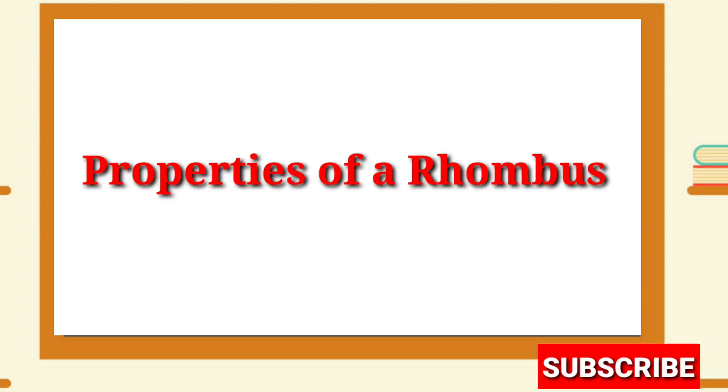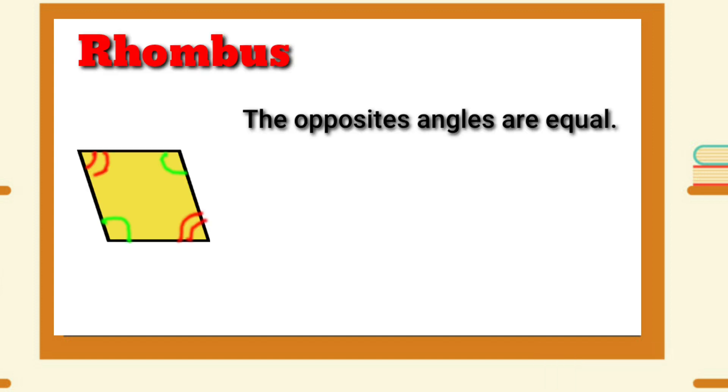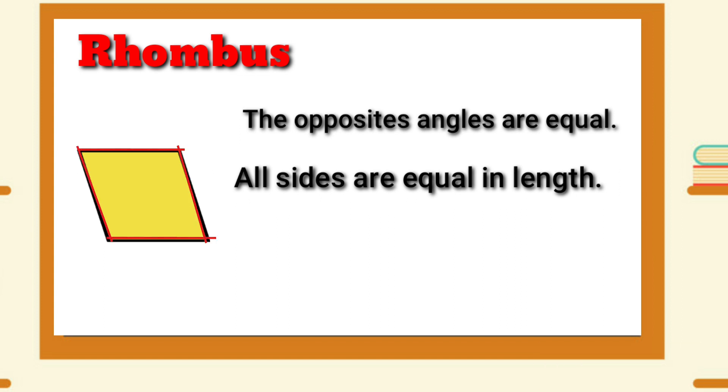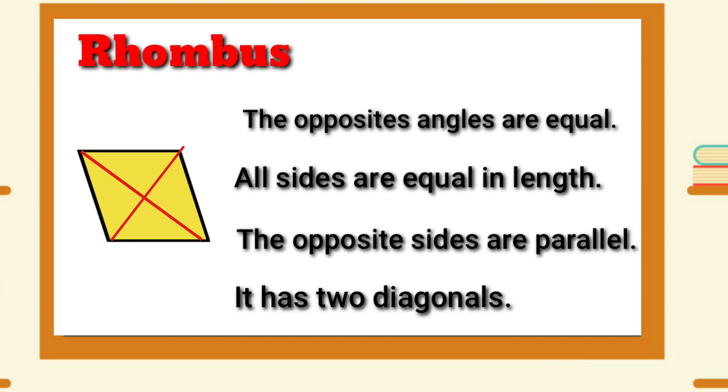Properties of a Rhombus: The opposite angles are equal. All sides are equal in length. The opposite sides are parallel, and it has two congruent diagonals.